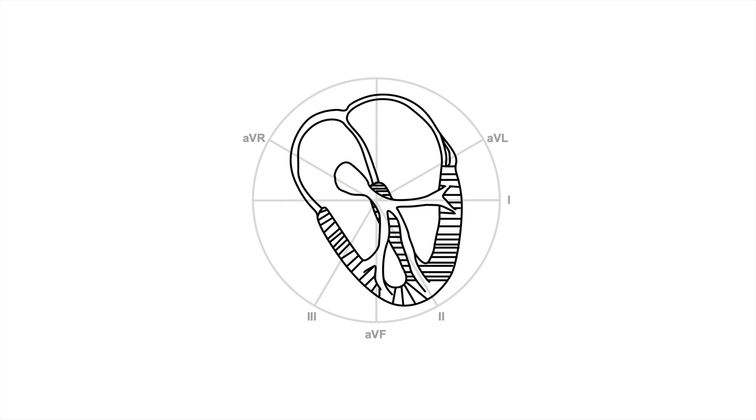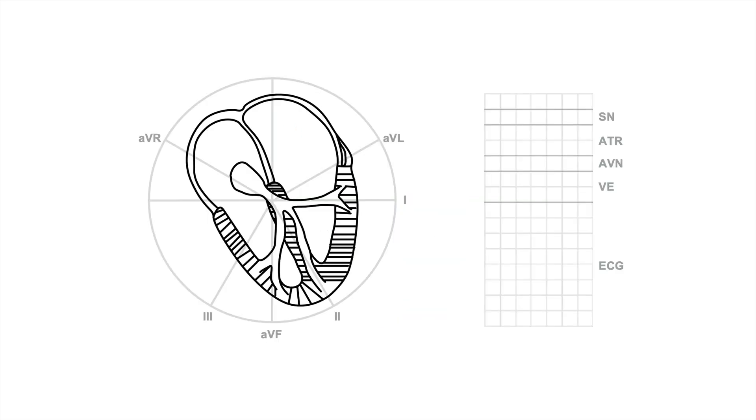Let's check it out again. So the impulse originates here, travels up, causes a positive P in AVR and a negative P in 2 and 3, and then the impulse travels down into the ventricles causing a completely normal QRS complex. Let's have a closer look in our ladder diagram. The impulse originates in the upper part of the AV node, travels up into the atria causing a retrograde P wave in lead 2 and a positive P wave in lead AVR, and then travels down into the ventricles causing a completely normal QRS complex.